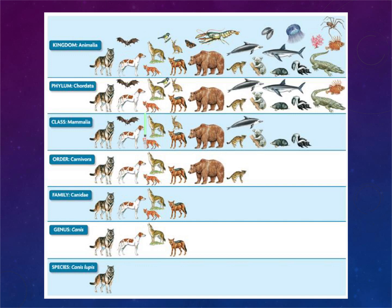Chordata again refers to the spinal cord, Mammalia to mammals, Carnivora to carnivores. All of these creatures are more and more related as you go down the classification. You can see 'canis' — all the dogs — which gives evidence that these were all descended from a common ancestor. The farther down you go, the more related the animals are and the more recently they shared that common ancestor.